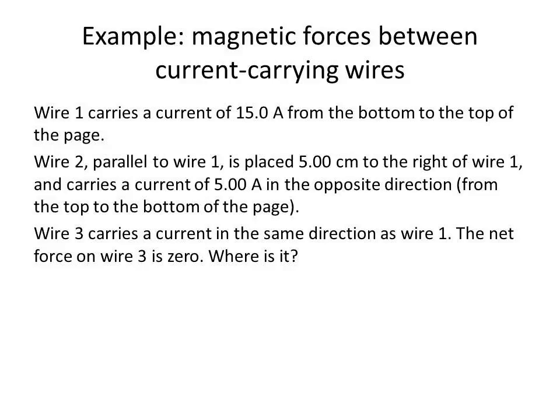Here's an example of magnetic forces between current-carrying wires. Wire 1 carries a current of 15 Amperes from the bottom to the top of the page. Wire 2, parallel to wire 1, is placed 5 cm to the right of wire 1 and carries a current of 5 Amperes in the opposite direction, from the top to the bottom of the page.